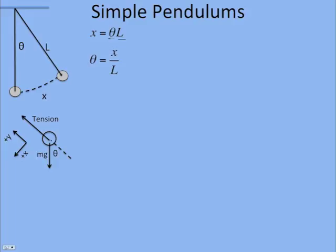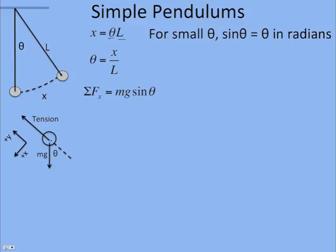So free body diagram, I have tension toward where the string is tied, I have weight straight down, this would be angle theta. And I make positive x the direction of the tangential acceleration. We're not doing centripetal acceleration here. So sum of the forces in the x equals mg sine theta. And so right away we have a problem. It doesn't look like this is a simple harmonic motion system. For a spring mass, the force was a constant times the displacement.